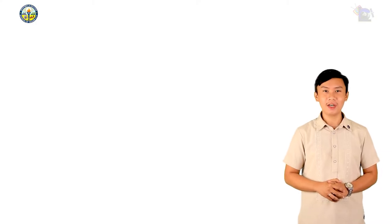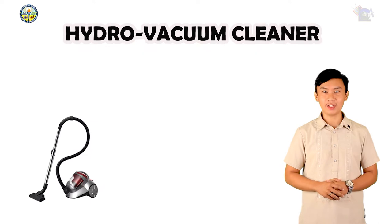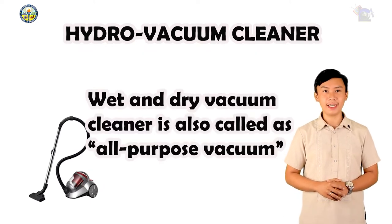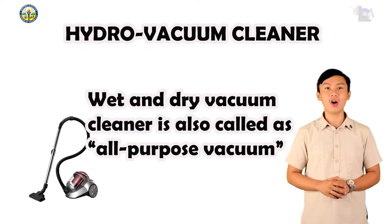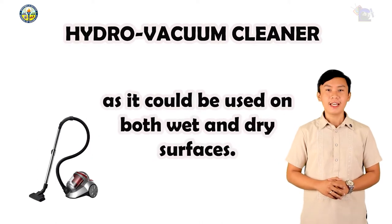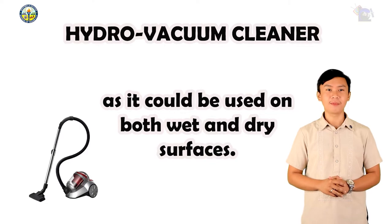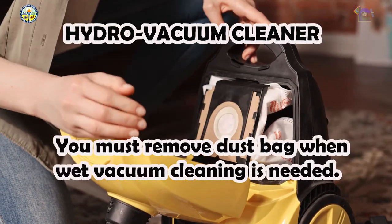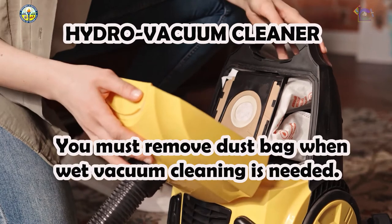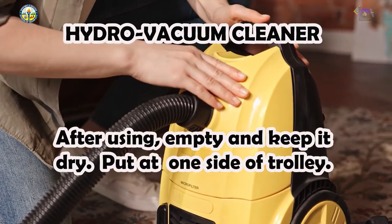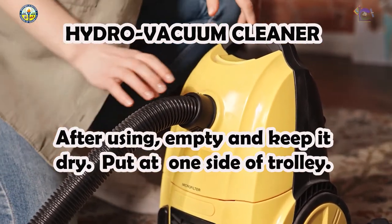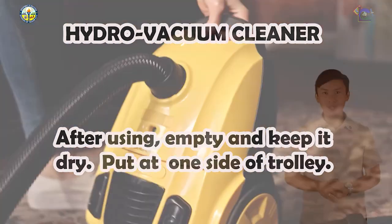Number 2: Hydro Vacuum Cleaner. A wet and dry vacuum cleaner, also called an all-purpose vacuum, can be used on both wet and dry surfaces. You must remove the dust bag when wet vacuum cleaning is needed. After using, empty it and keep it dry. Put it at one side of the trolley.